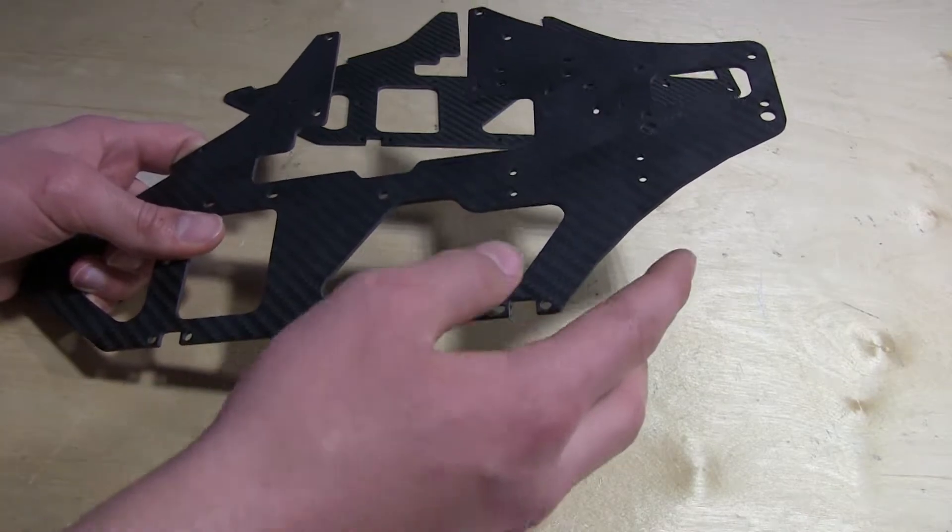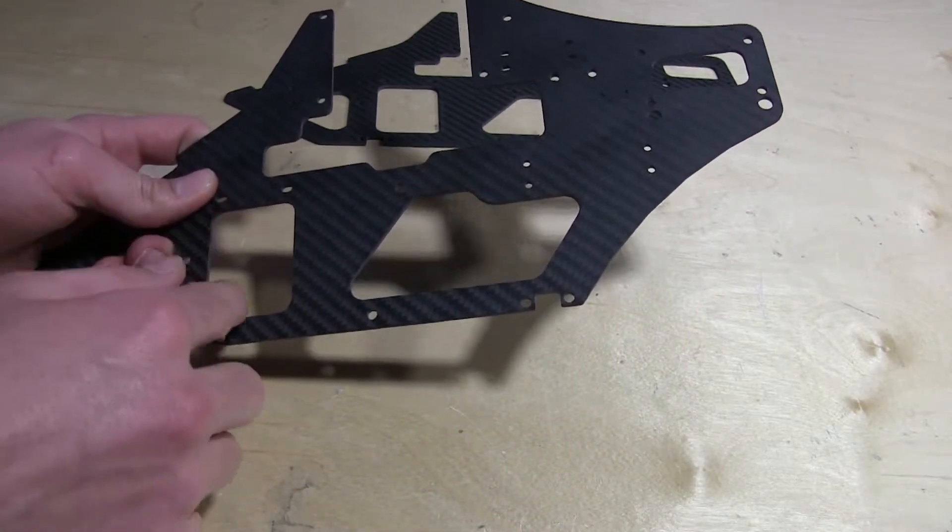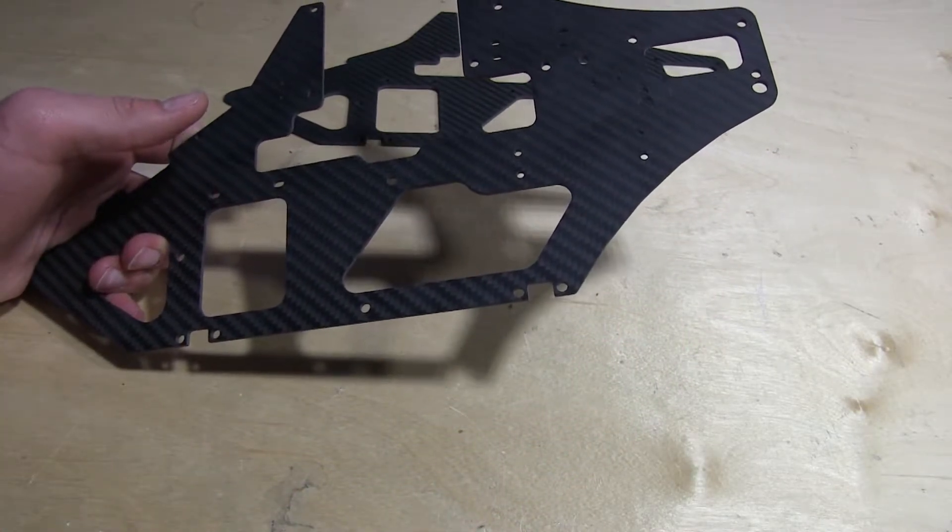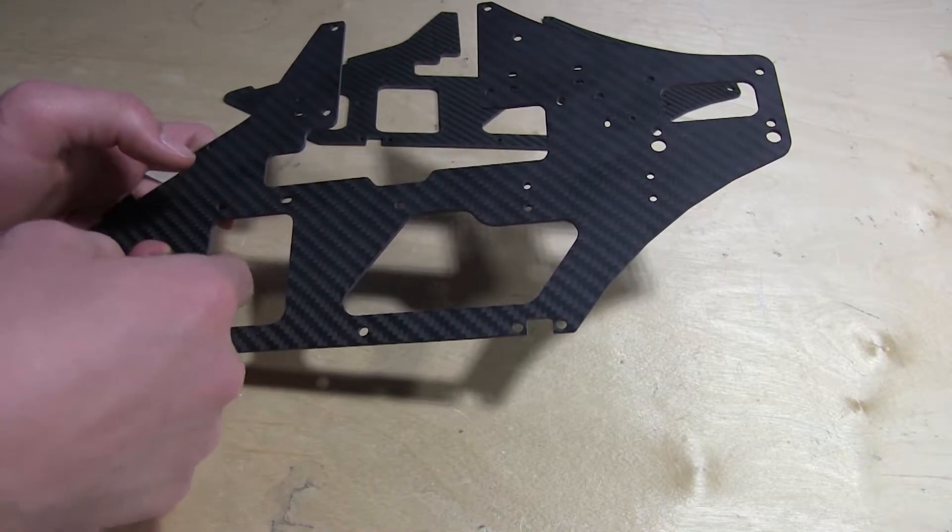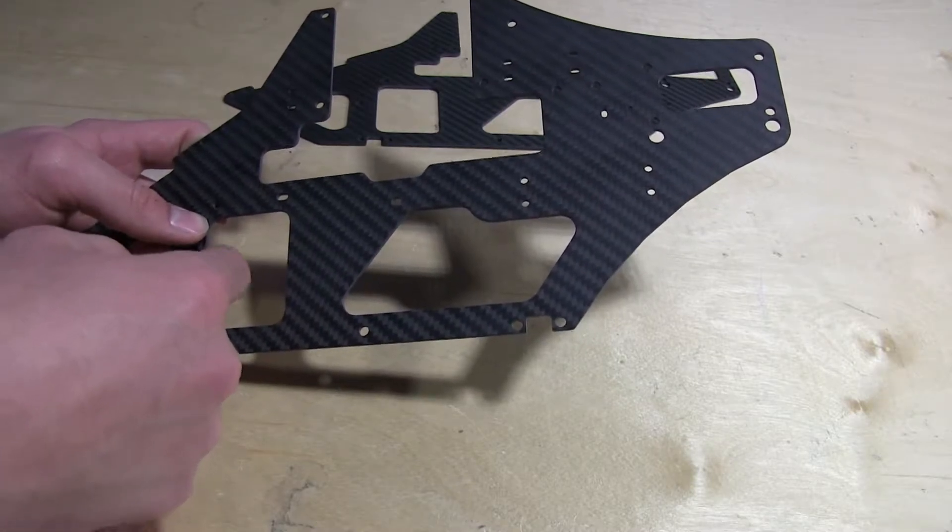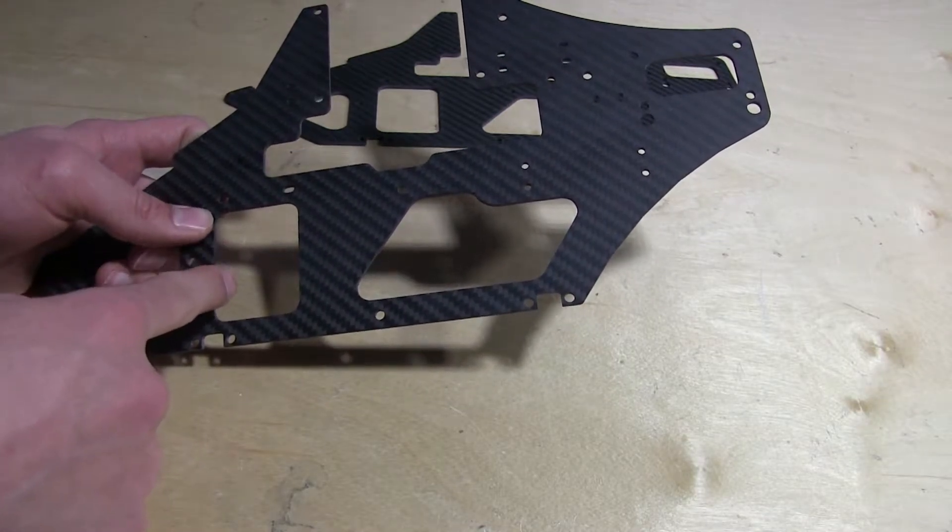One thing that I like to do before I start building on the mainframe is I like to take sandpaper and sand around the edges anywhere in here. This is so that whenever I'm hooking up my electronics later, there are no wires that are going up against the edge and fraying over time due to the carbon fiber being sharp.